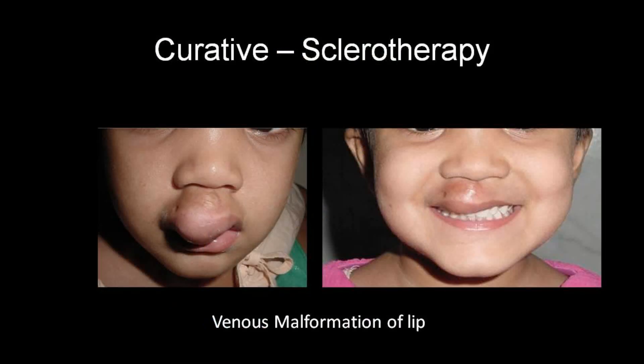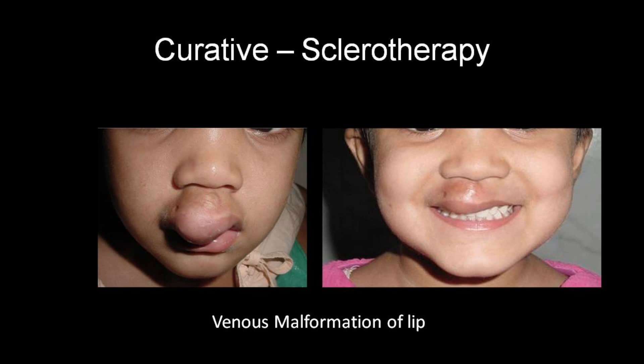I can show you some examples. This small girl has a vascular malformation on her lip. Doing surgery for her is very morbid — part of the lip would be removed, causing a cosmetic defect. So what we did is sclerotherapy: we put a needle into it, injected a drug, and you can see after two sessions it has completely gone — near complete resolution, with only some residual remaining.